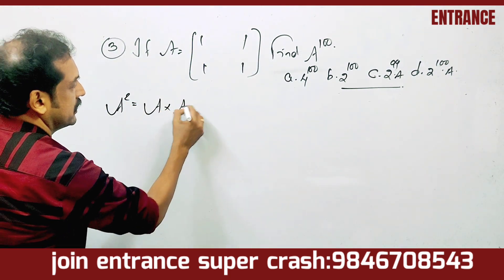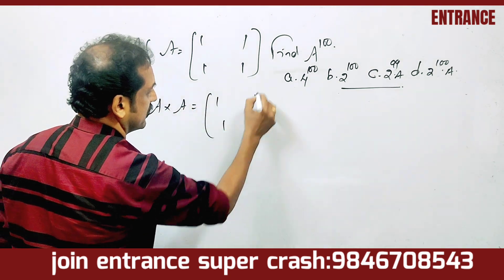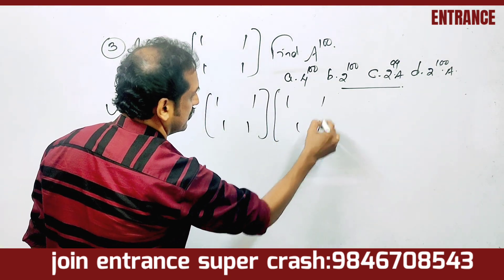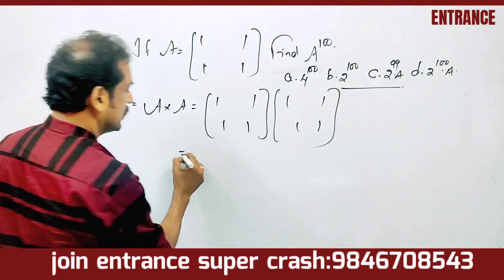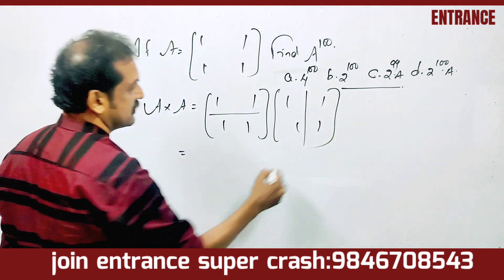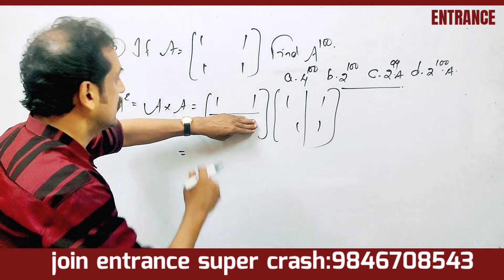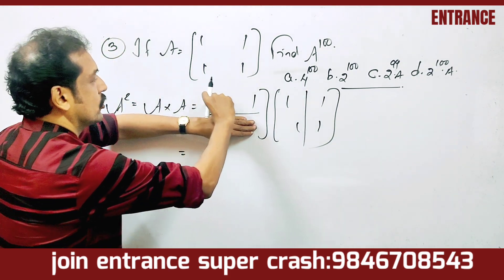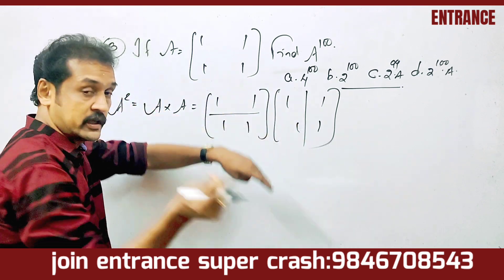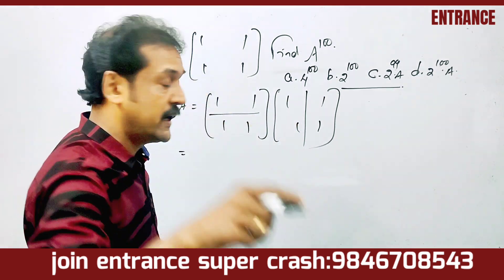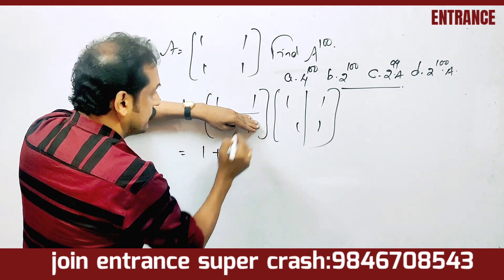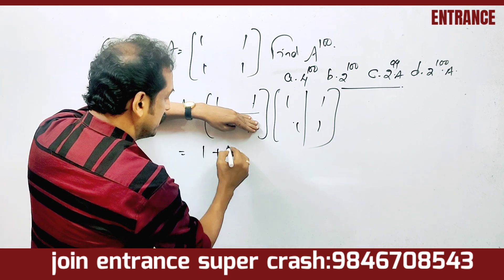A into A — that is the matrix with all ones, [[1,1],[1,1]], multiplied by itself. We do row into column: first row times first column equals 1 into 1 plus 1 into 1.